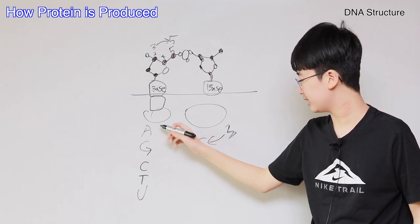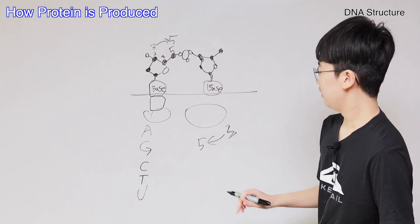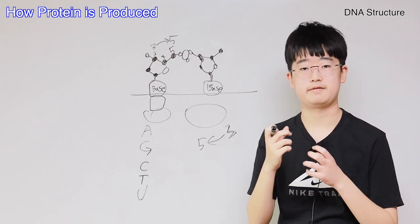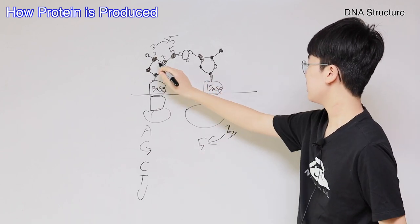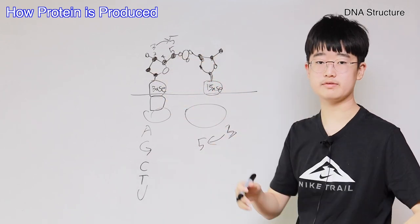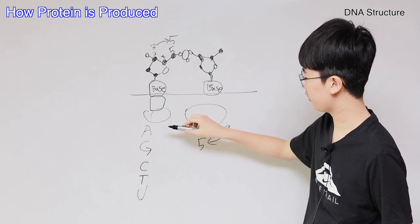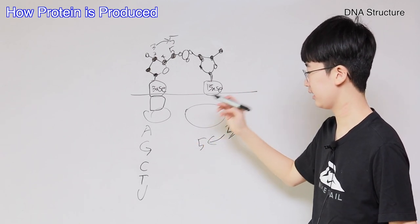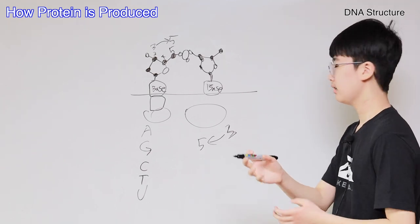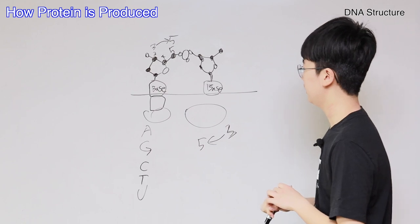These four bases - adenine, guanine, cytosine, thymine - are the molecules that carry the actual information. The carbon backbone is just for connecting everything together. The actual information is stored in those bases. Now, how is messenger RNA made?